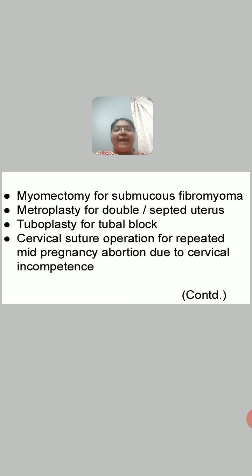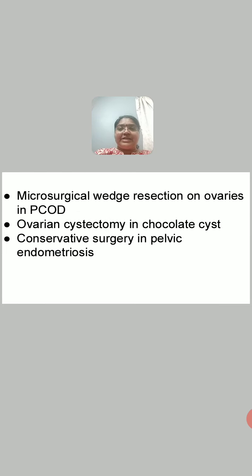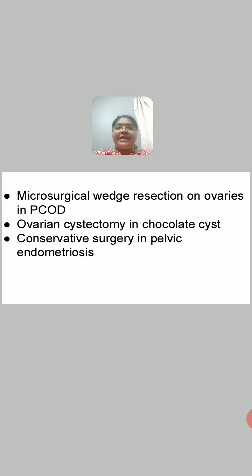Cervical suture operation is indicated for habitual abortion when the cause is cervical incompetence — when the cervical os remains open. These surgical treatments are done when the cause of infertility is known. Further surgical options include microsurgical wedge resection on ovaries in PCOD, ovarian cystectomy in chocolate cyst of the ovaries, and conservative surgery in pelvic endometriosis.